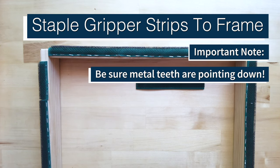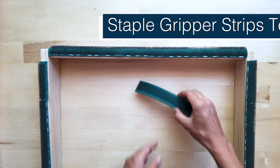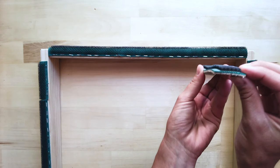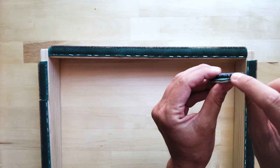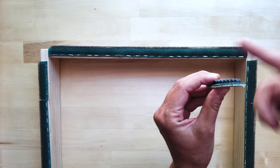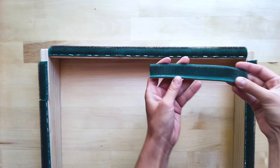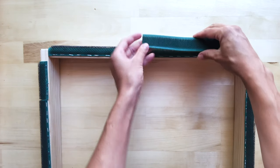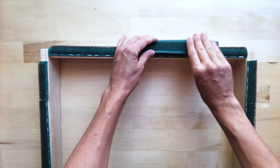When putting your gripper strips on your wood frame, you're going to want to make sure your metal teeth are pointing down. So if you look at your gripper strip, they have an angle to them. These are going this way. So when you put it on the gripper strip, you want to make sure that's pointing down this side so it can grab your fabric.